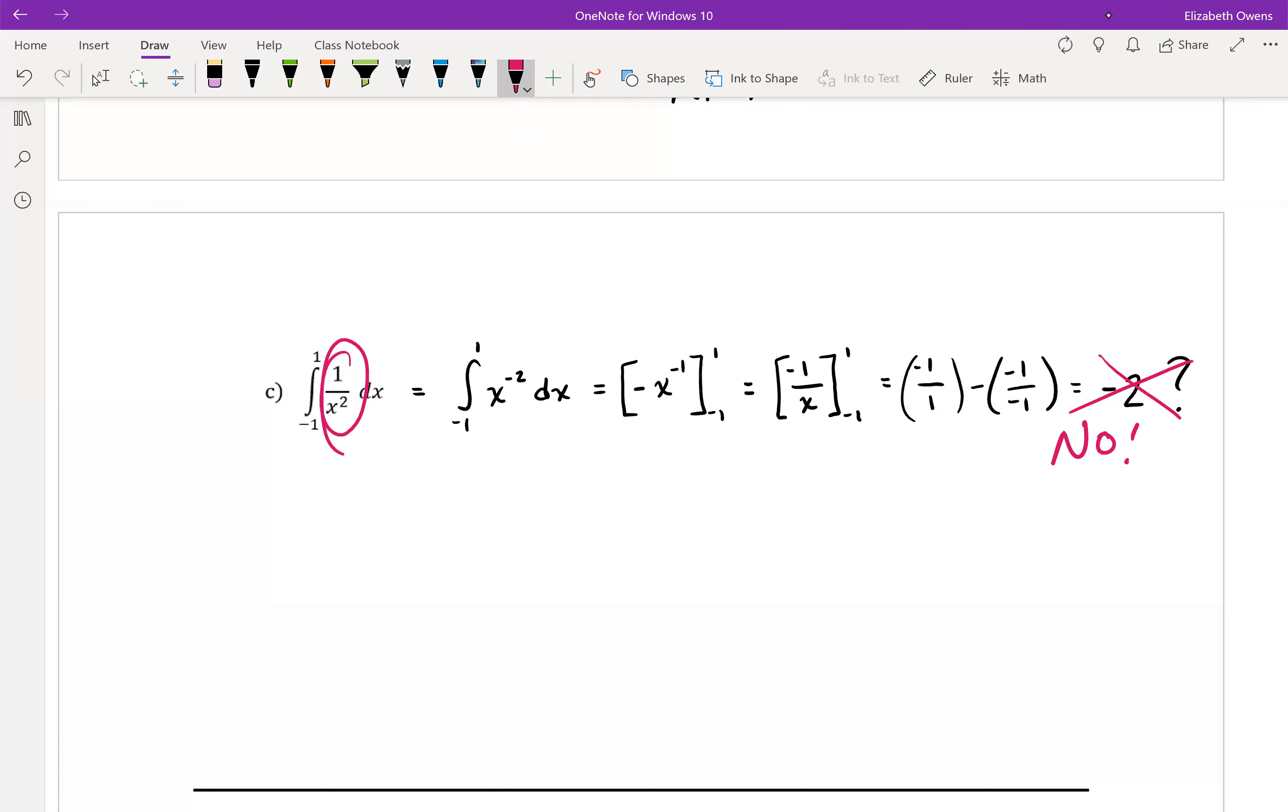In this example here, this 1 over x squared is not a continuous function on this interval from negative 1 to 1. This function is discontinuous at x equals 0.